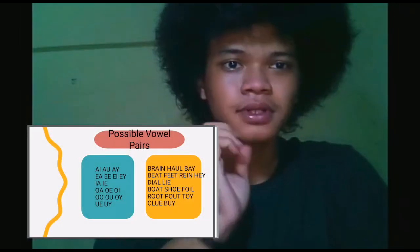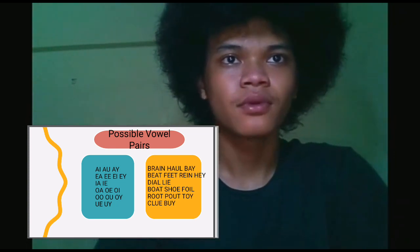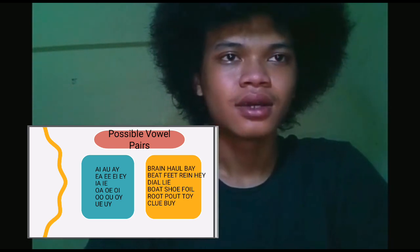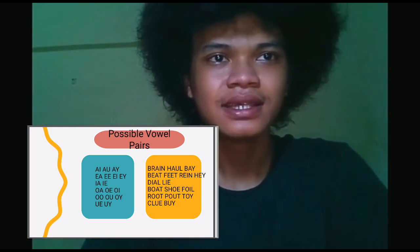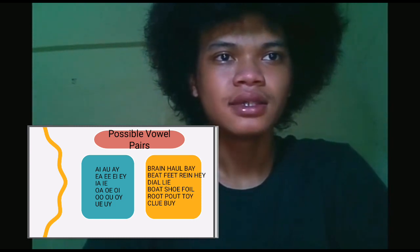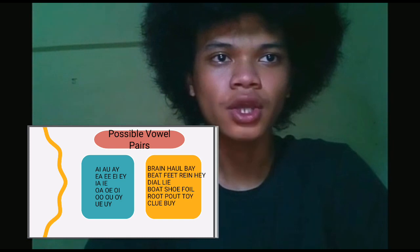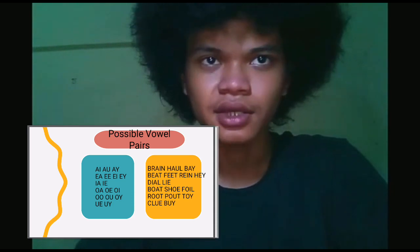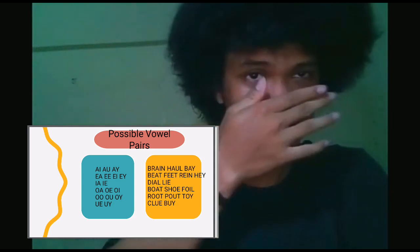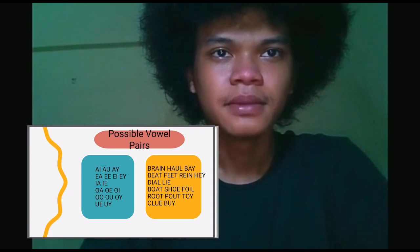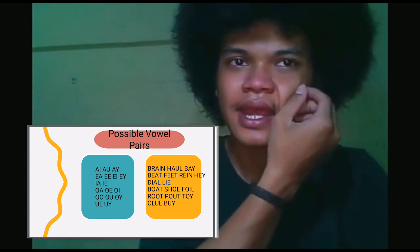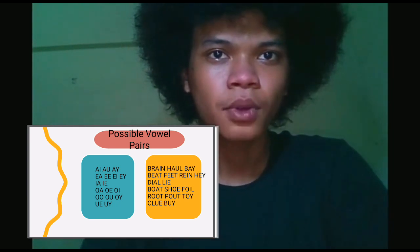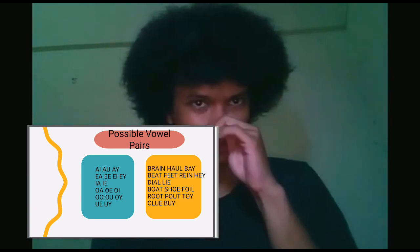For possible vowel pairs: AI, AO, and AY; then AE, EE, EI, IA, OA, OO, OY. These are found in words like: brain, howl, bay, beat, feet, rain, hay, dial, lie, boot, shoe, foil, root, boot, toy, glue, and bye.